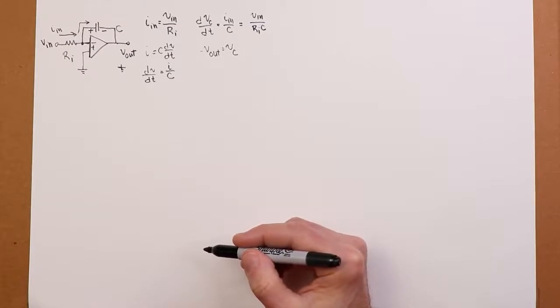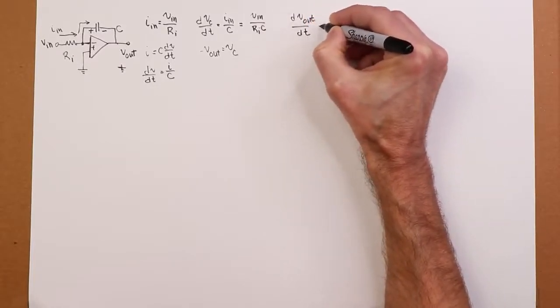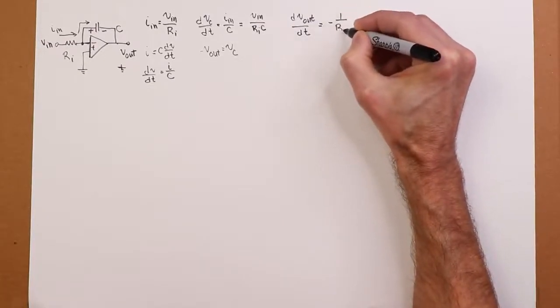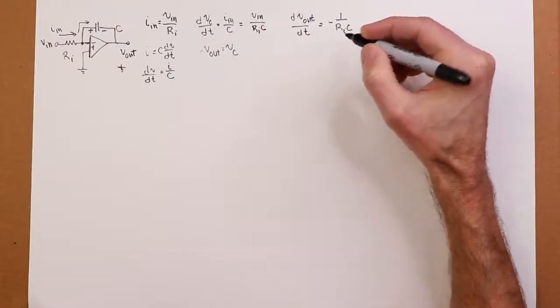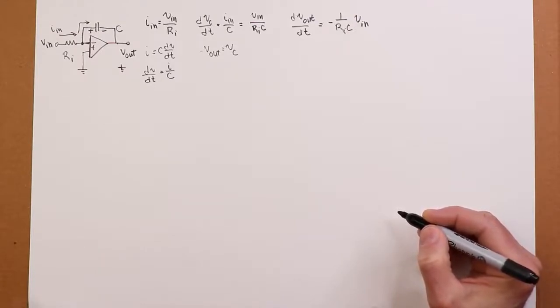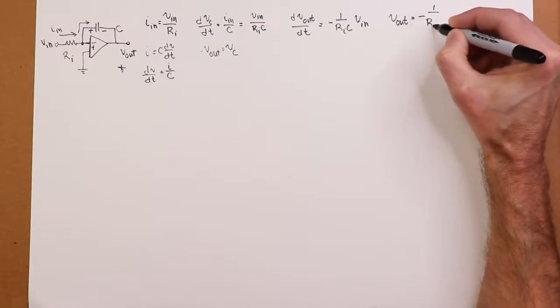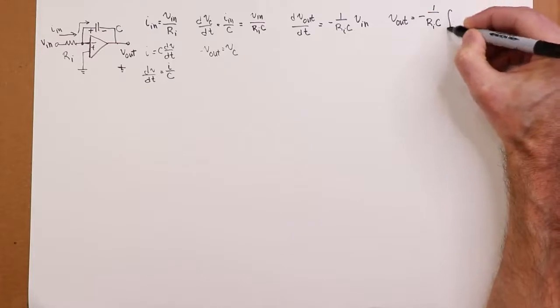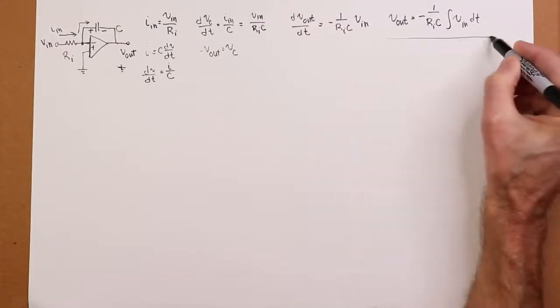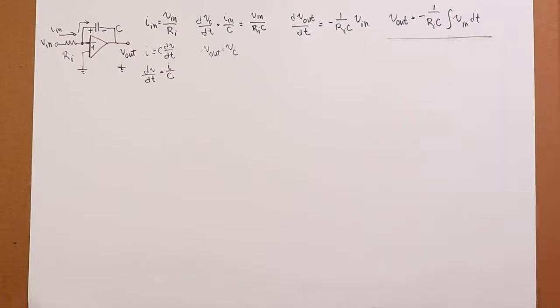Either way, you want to look at that. But when we combine this up, we can then say that dVout/dt would have to equal a negative 1 over RIC Vin. Now, we take this and integrate it. And what we wind up with is Vout is equal to a negative 1 over RIC times the integral of Vin dt. So, this is our big equation describing what's going on. So, basically, the output is simply a scaled and inverted integral of the input voltage. Bingo.